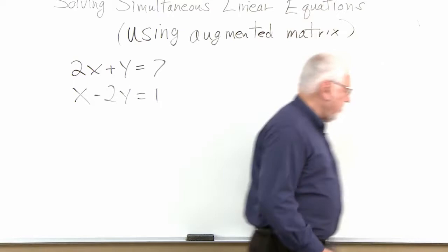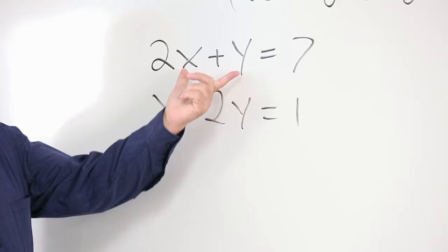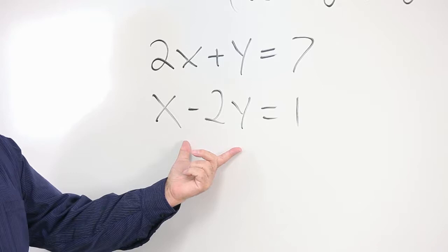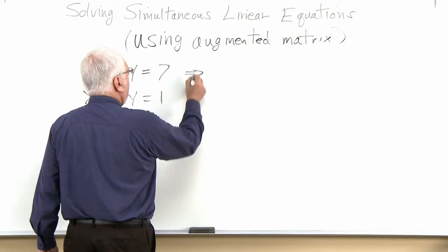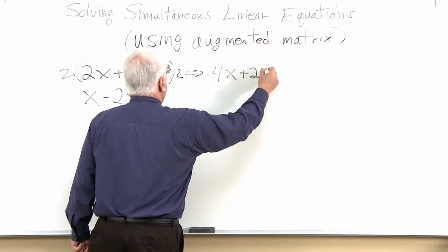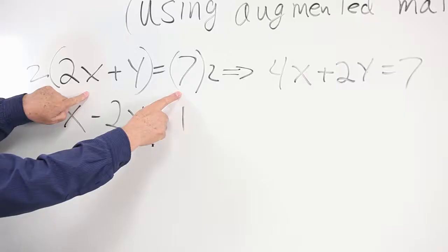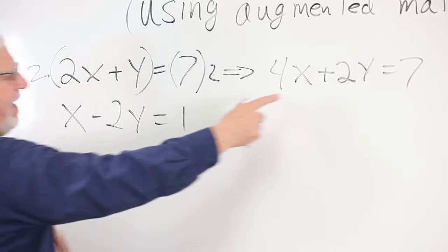When we solve this algebraically, we try to get rid of one of the variables. For example, if we were to multiply the top equation by 2, we could do that. So multiplying both sides by 2, we'd get 4x plus 2y equals 14. We know that if these were equal and we multiplied both sides by a non-zero number, the results are still going to be equal and we won't have lost anything, so that statement is equivalent.